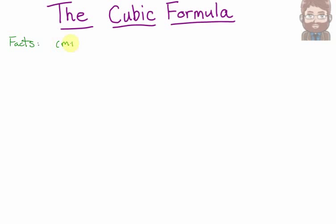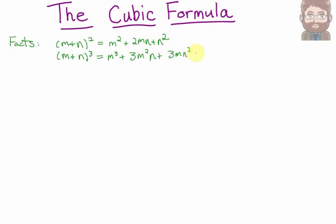First, I'm going to do a lot of quick algebra, and I'm going to be using the facts that (m+n)² = m² + 2mn + n², and (m+n)³ = m³ + 3m²n + 3mn² + n³.